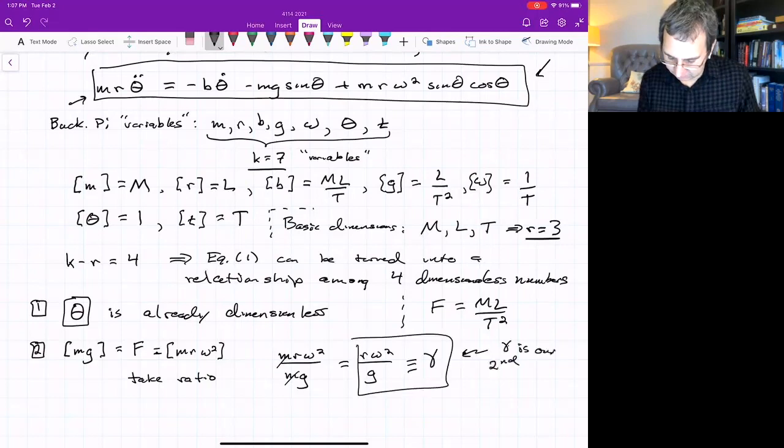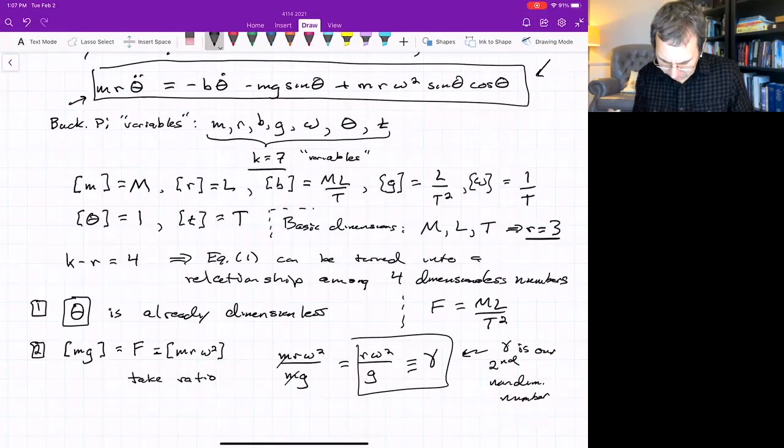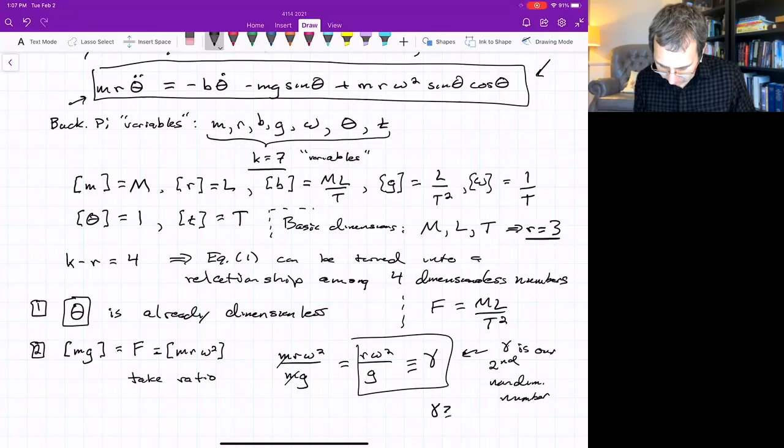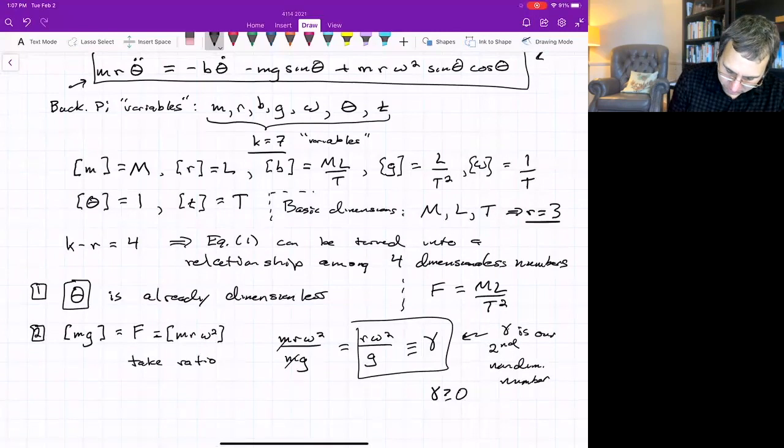That's a non-dimensional number. We'll call this gamma. That's how we'll define gamma. Gamma is our second non-dimensional number. And notice something about gamma. Because r is positive, g is positive, omega squared is positive, so gamma is greater than or equal to zero. It could be zero if we have a non-rotating hoop.